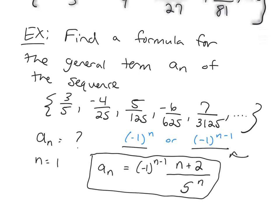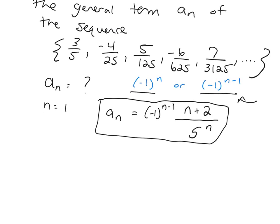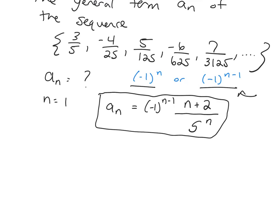Okay? So if your sequences have a lot going on, which this one did, there's some pattern in the numerator, some pattern in the denominator, this sign change going on, just break it into pieces and look for the pattern in each part. Okay? Kind of dissect it into the individual items. Any questions before I go on? Okay.